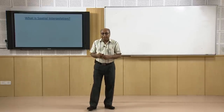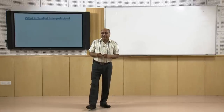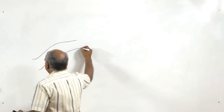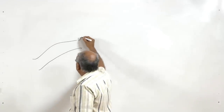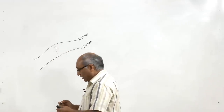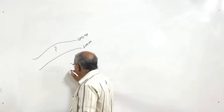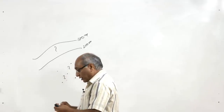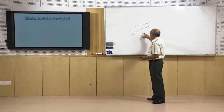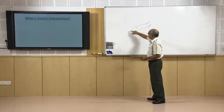Why is interpolation required? Because point or contour representation is a discrete representation. Between two contours — say a 100-meter contour and a 200-meter contour — we do not have any information. There is a gap. Similarly with point data: between two points we do not have any information, so we do not have the height of those locations where no observations are available.